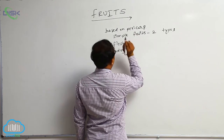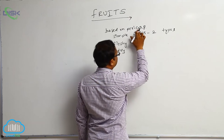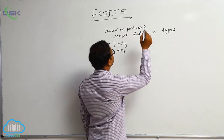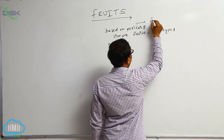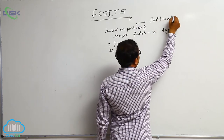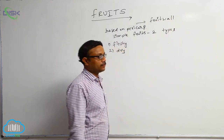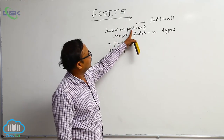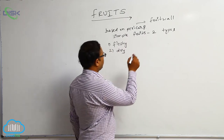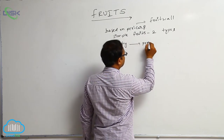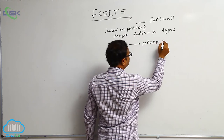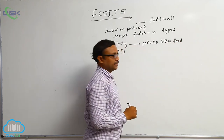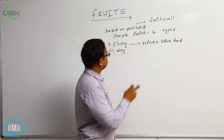Pericarp means fruit wall. The ovary is converted into fruit, and the ovary wall is known as the fruit wall — this fruit wall is known as the pericarp. If the pericarp stores food material and becomes fleshy, that is known as fleshy fruits.